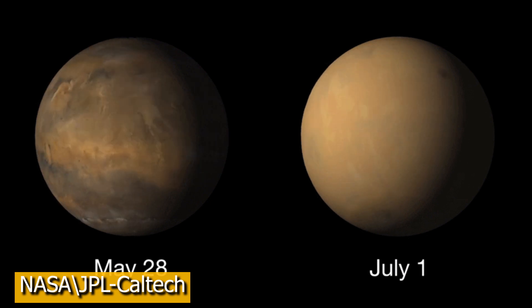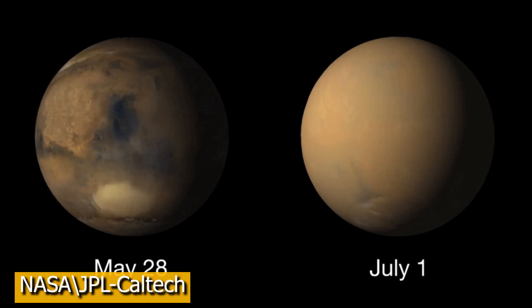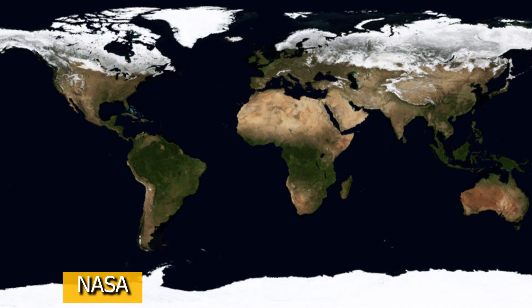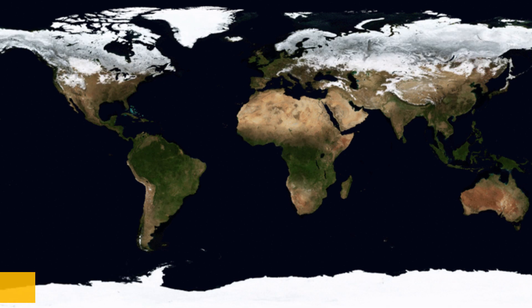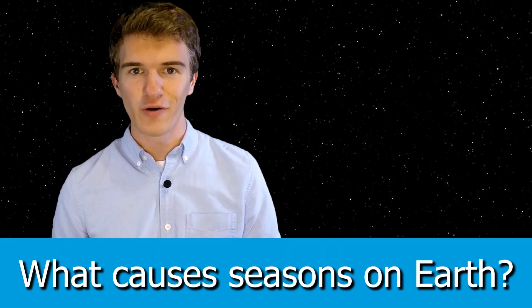So why is Mars' season so much more extreme than ours here on Earth? And to address this question, let's first take a look at what causes the seasons here on Earth, and then we can transition over to Mars. And I know what a lot of you are thinking. You're probably thinking, just explain what's going on on Mars. However, if we understand what's happening on Earth, and why our seasons are a little bit more stable, it'll make more sense when we look at Mars and see why it's different. So to begin, let's talk about what causes the seasons here on Earth.